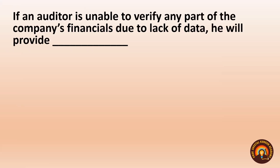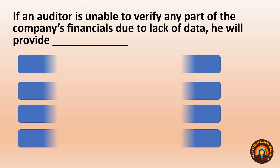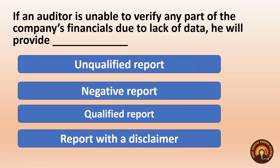Next: If an auditor is unable to verify any part of the company's financials due to lack of data, he will provide which report? Options: Unqualified report, Negative report, Qualified report, Report with a disclaimer. An auditor provides a report after scrutinizing financial statements and supporting documents. If the auditor is unable to verify any part due to lack of data or information, he will provide a report with a disclaimer.